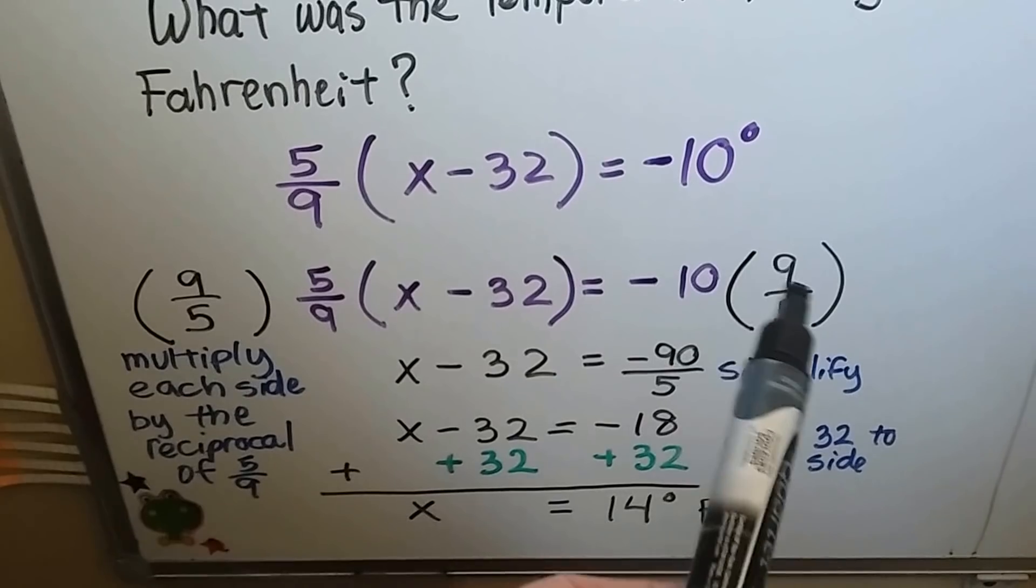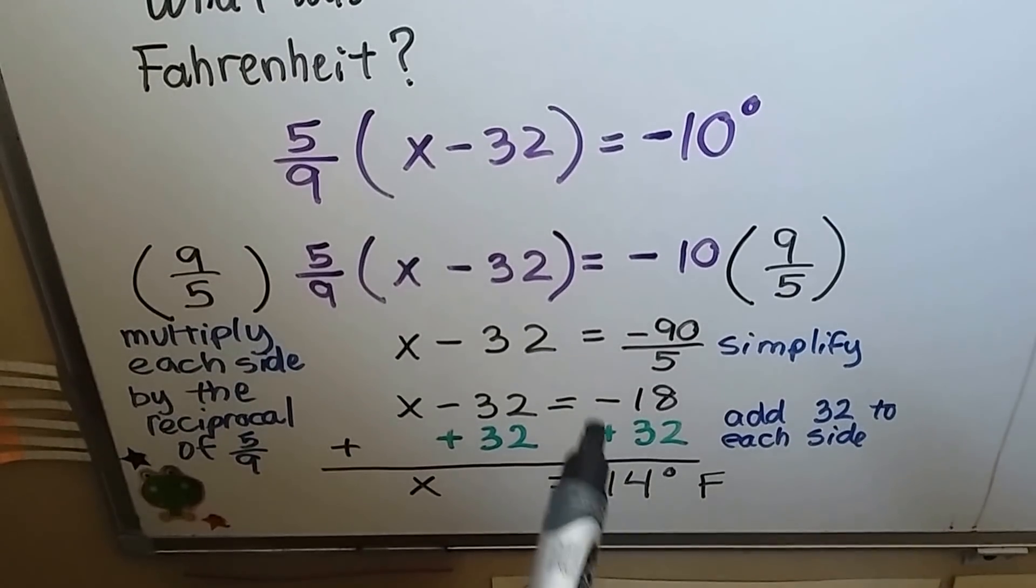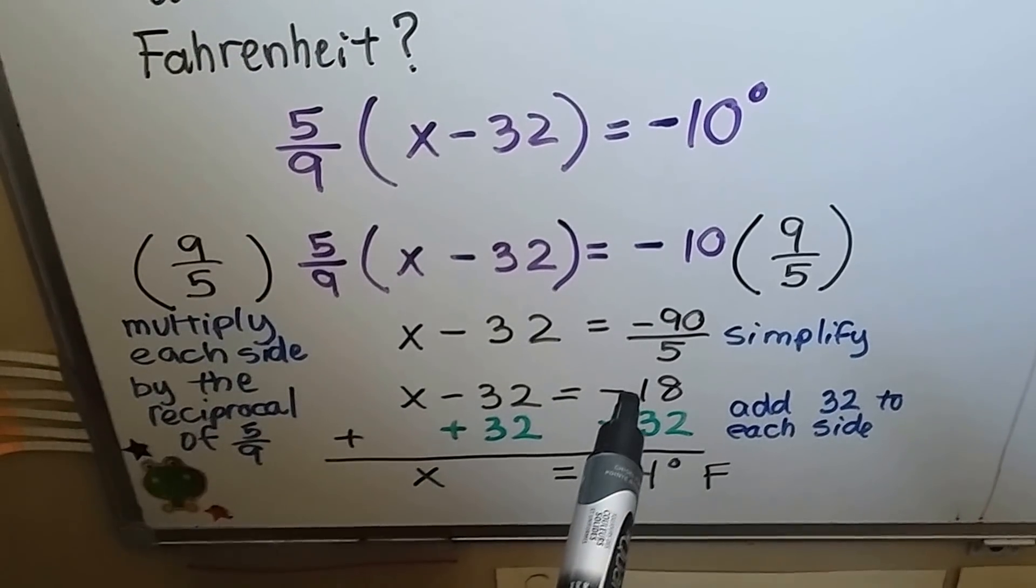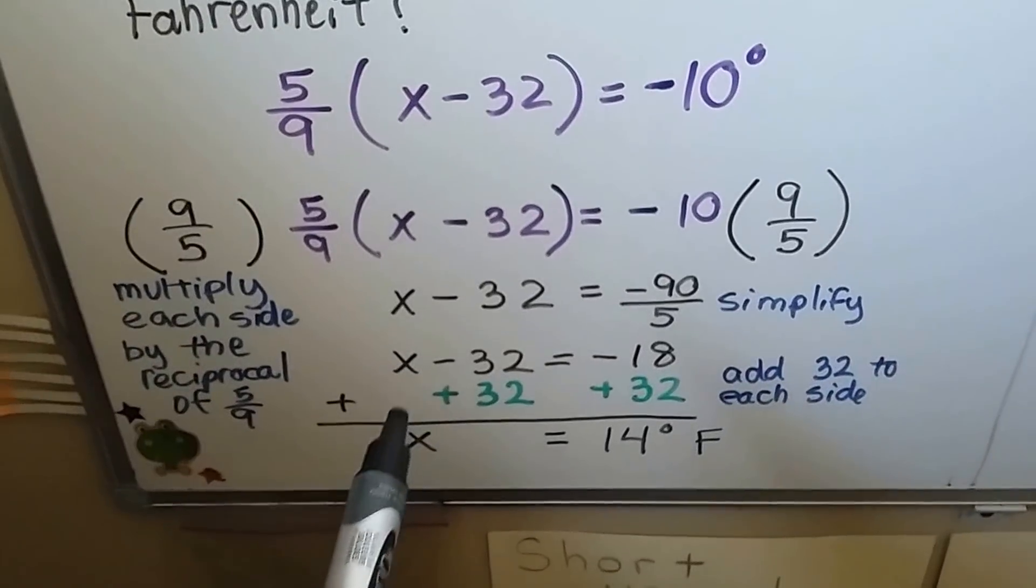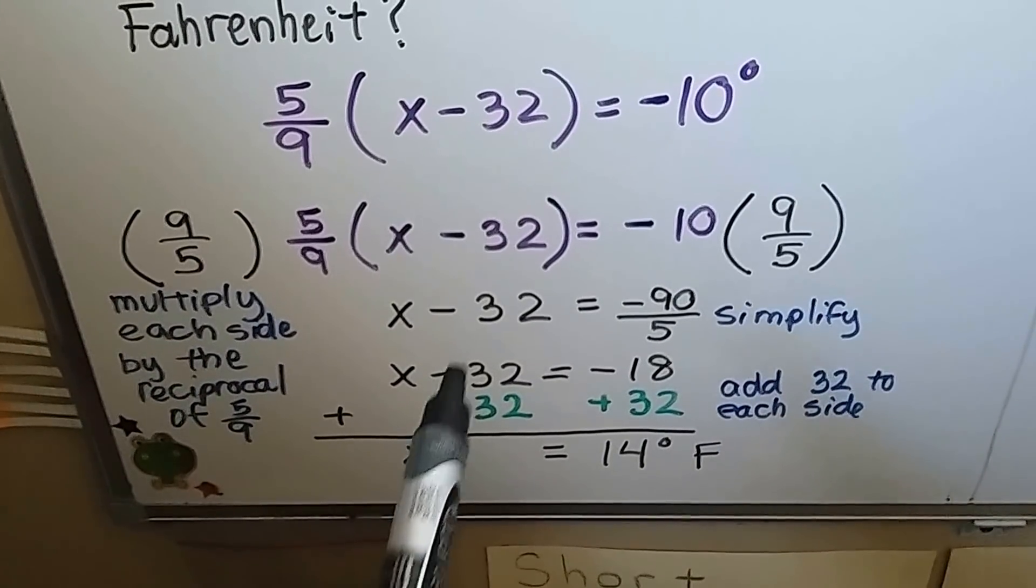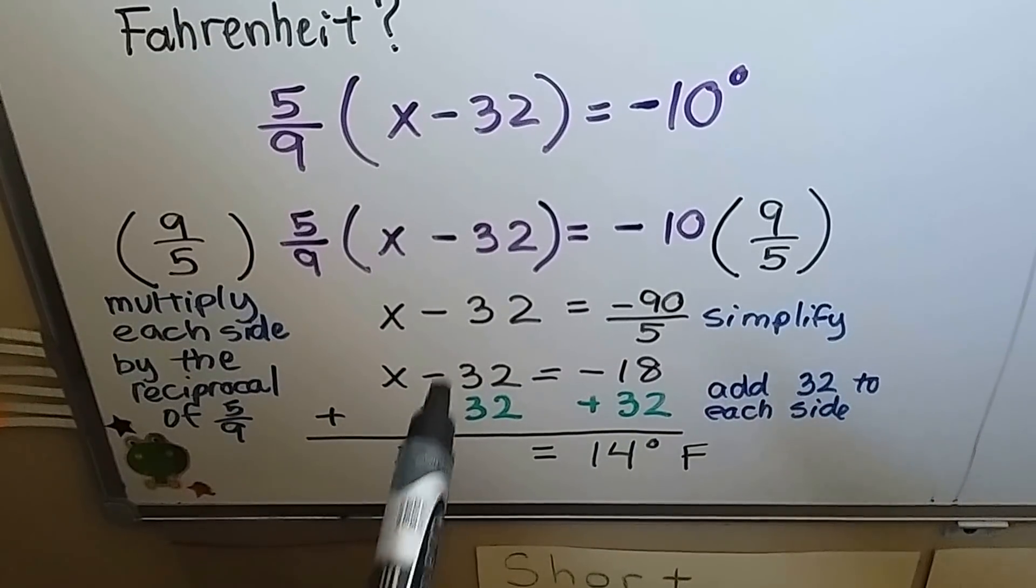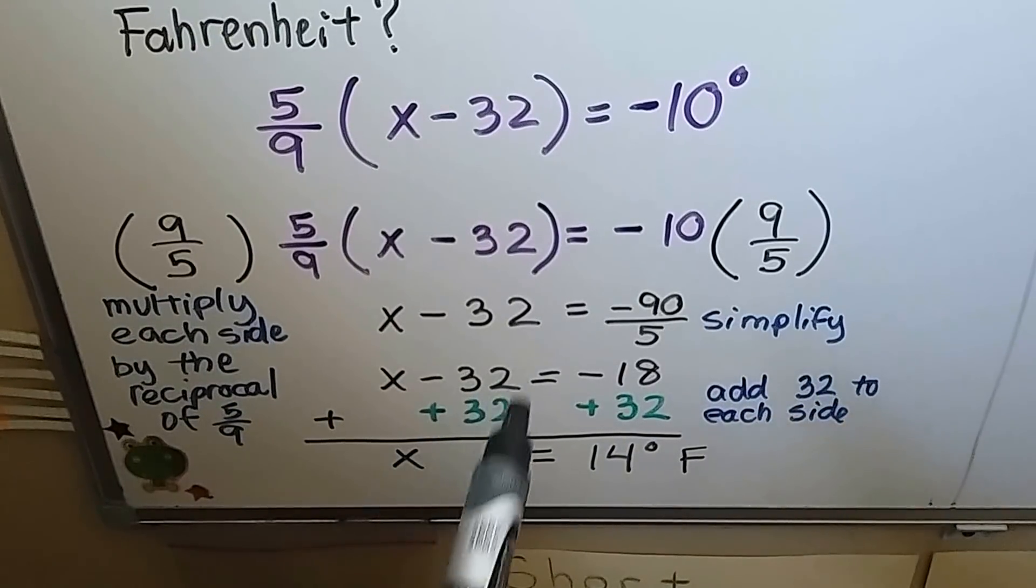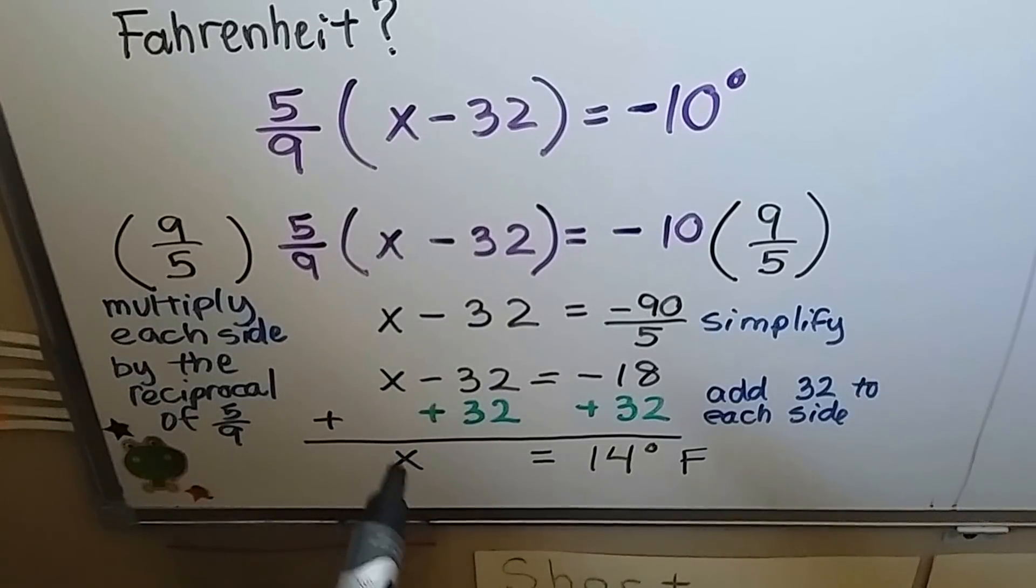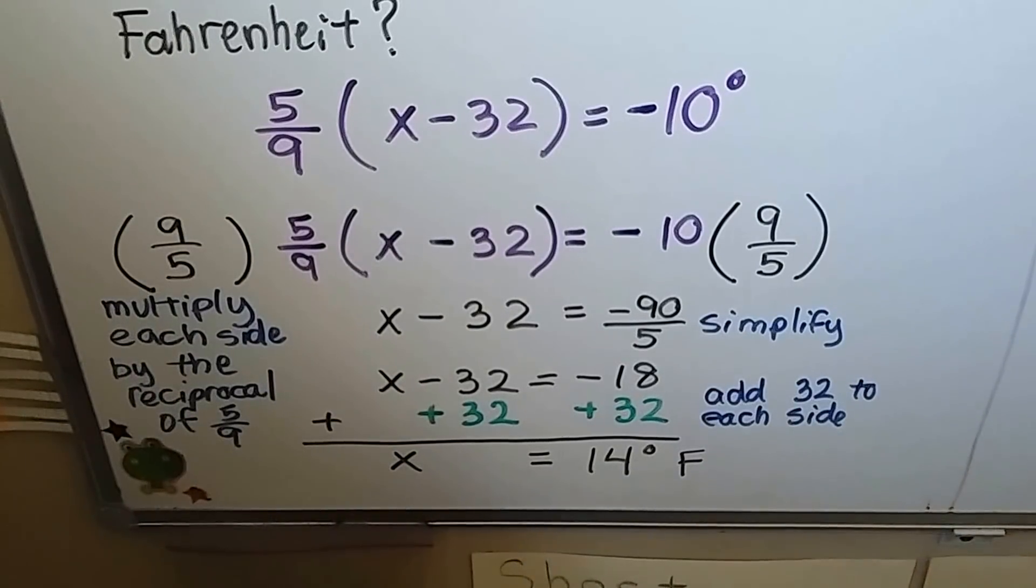On this side, we get a negative 90 over 5, and when we simplify that, we get a negative 18. Now, we can add this 32 to each side of the equation to isolate that x. It creates a zero pair here. We end up with just x equals 14 degrees Fahrenheit.